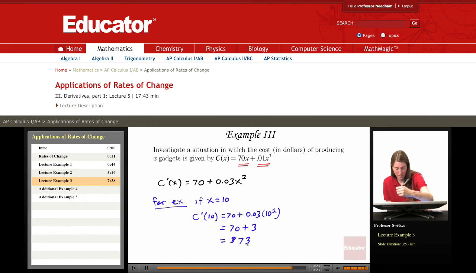And let me try to put down a note to that effect here. So this is the rate of change in cost with respect to the number x of gadgets. And it's the rate of change when x equals 10 gadgets.